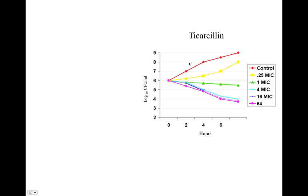Let's go through some drugs and talk about whether they're time-dependent killers or concentration-dependent killers. Here's ticarcillin. If we start out with 6 log10 colony-forming units per ml and we don't have any drug on board — that would be the control — we can see that as time increases, the bug continues to grow to 9 colony-forming units after about 7 hours. At 0.25 times the MIC, it continues to grow, but not quite as quickly.